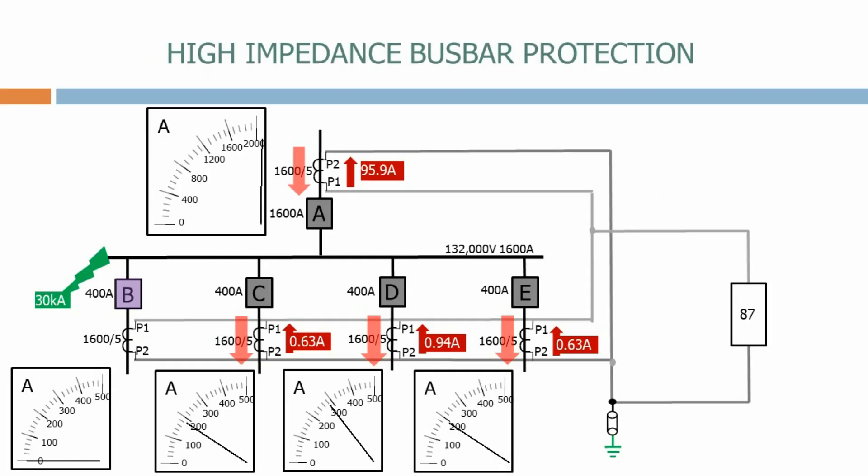This is more than enough current to operate the busbar differential relay and it operates all of the circuit breakers connected to the busbar. The fault has now been cleared from the system.